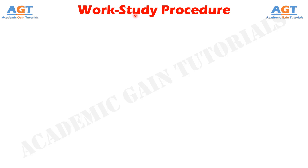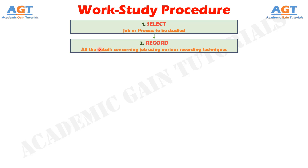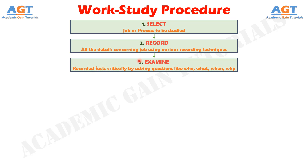There are several steps involved in work study. Step number 1: select the job or process to be studied. Step number 2: record all the details concerning the job using various recording techniques. Step number 3: examine the recorded facts critically by asking questions like who, what, when, and why.